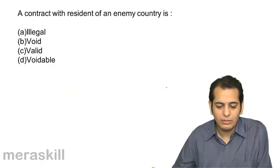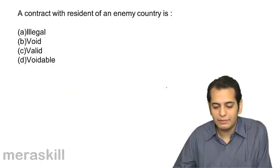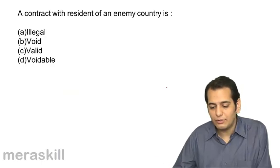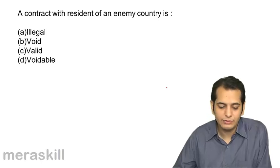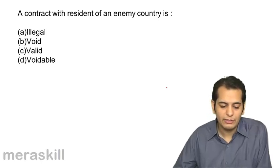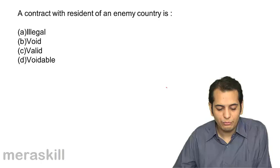The next question: a contract with a resident of an enemy country is — A. Illegal, B. Void, C. Valid, D. Voidable.